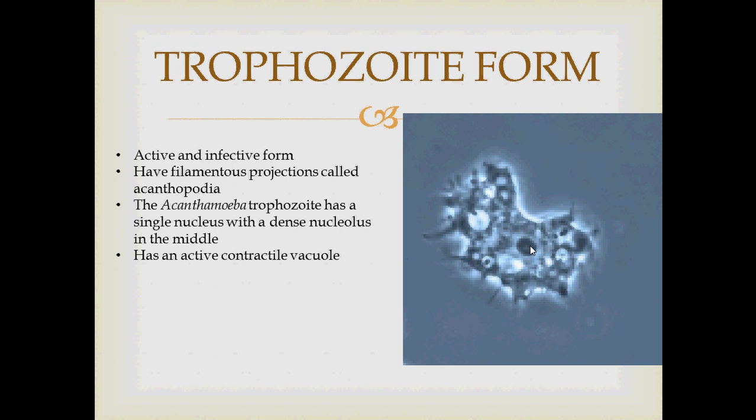The Acanthamoeba trophozoite also has an active contractile vacuole. The function of the contractile vacuole is to collect water and pump it out of the cell.